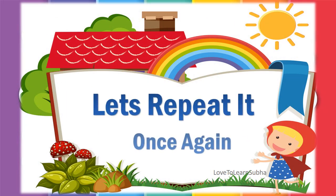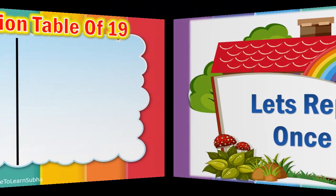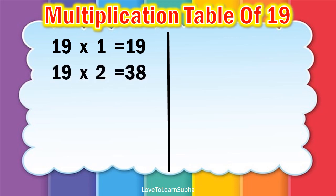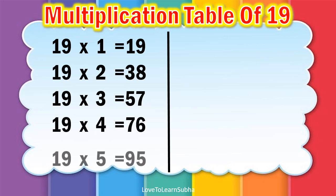Now, let's repeat it once again. Nineteen ones are nineteen. Nineteen twos are thirty-eight. Nineteen threes are fifty-seven. Nineteen fours are seventy-six. Nineteen fives are ninety-five.